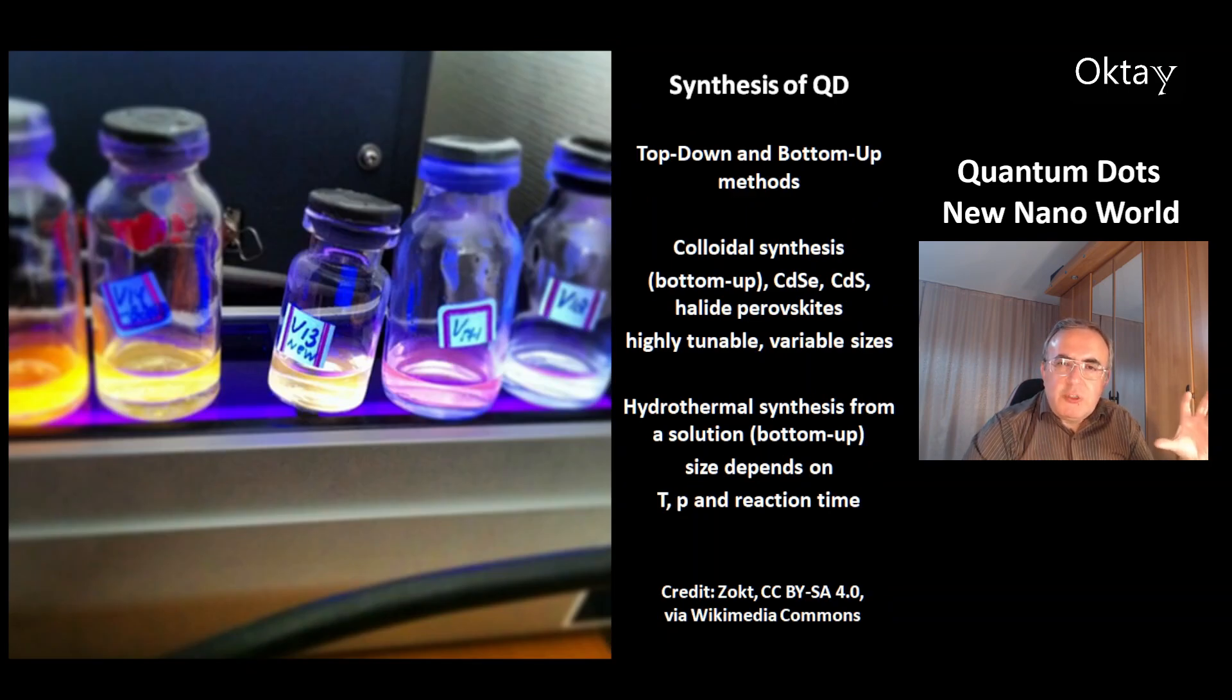There are two approaches for synthesis of quantum dots, top-down and bottom-up methods. Here are two examples of the bottom-up method. Bottom-up means from tiny particles like atoms and ions building these quantum dots. Top-down is from a bulk material breaking it down to quantum dots.